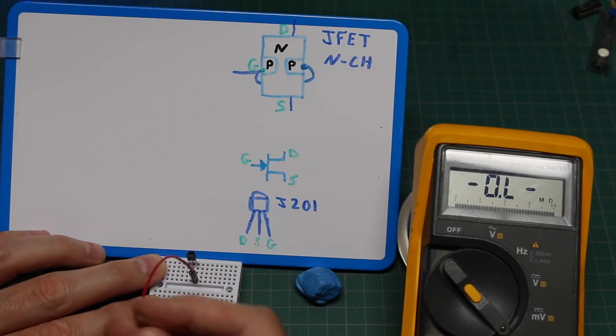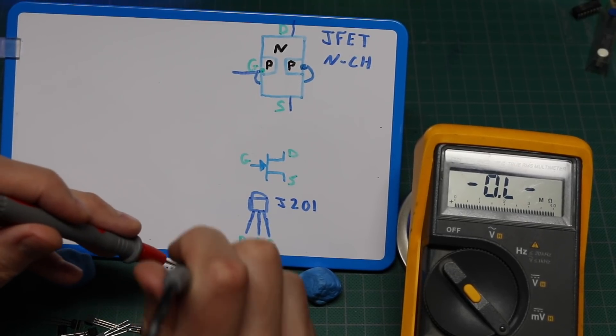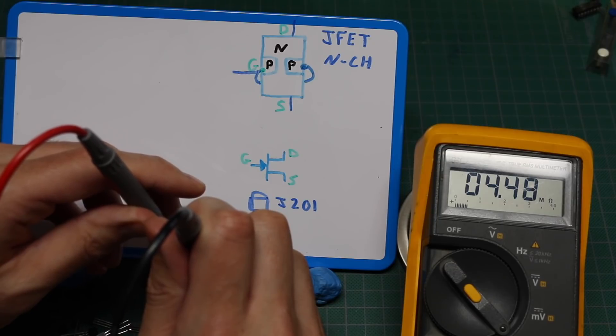I'll just use a wire to short gate to source. Now resistance from source to drain is four and a half megohms, which looks like a closed channel, but it should be open.